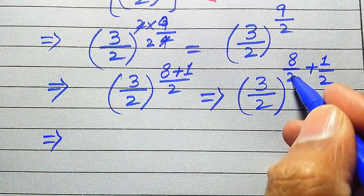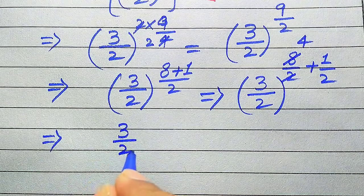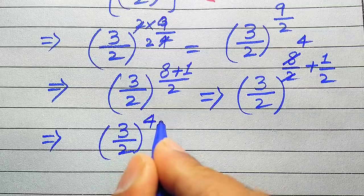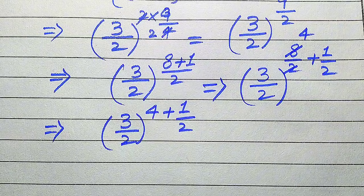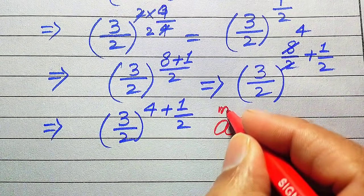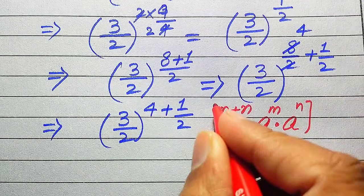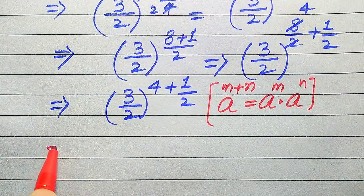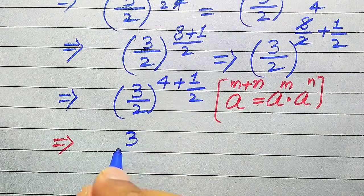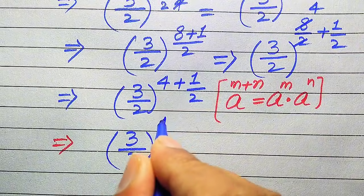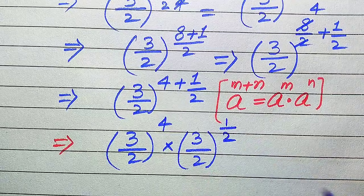After cancellation, 8 over 2 becomes 4, so we obtain (3 over 2) to the power of 4, plus 1 over 2. We use the exponential law: a to the power of m plus n equals a to the power of m multiplied by a to the power of n. Splitting the exponents, this becomes (3 over 2) to the power of 4, multiplied by (3 over 2) to the power of 1 divided by 2.